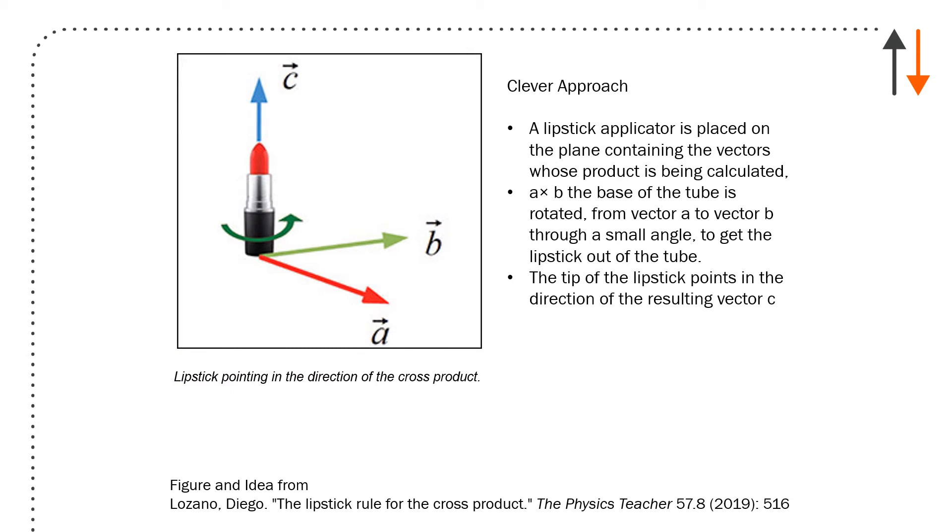There's also a kind of clever approach I found in a journal called The Physics Teacher. It's from Diego Lozano, The Lipstick Rule for the Cross Product. Lipstick applicator is placed in the plane containing the vectors, so from A to B. You rotate in the direction of the vectors, and your positive is going to show you the direction of the resulting vector. So the tip of the lipstick moves in that direction. Engineers generally like counterclockwise as a positive direction.